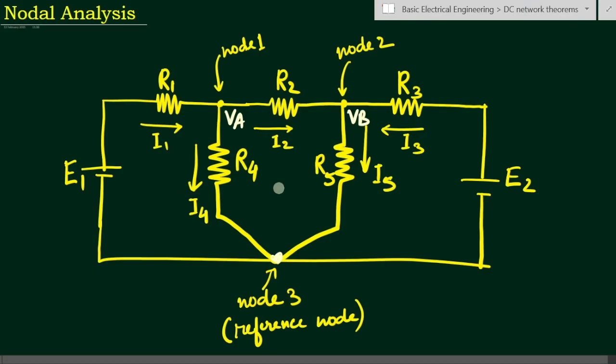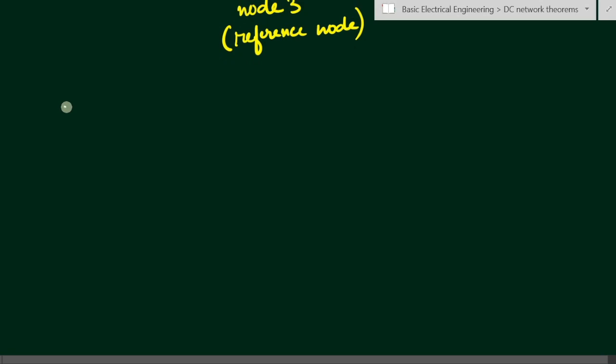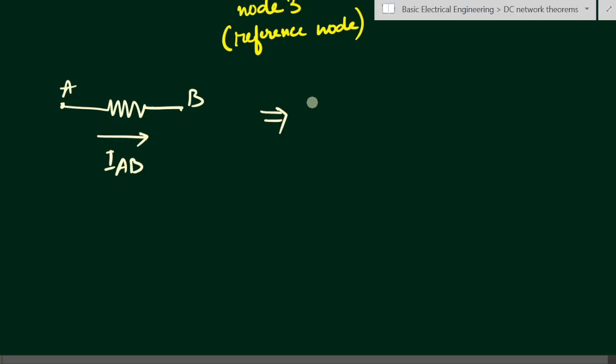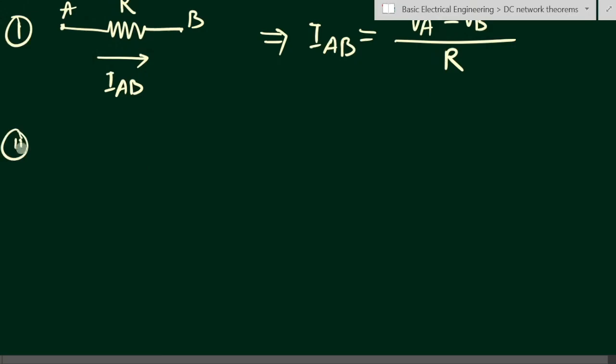First, if there is only one resistance between points A and B, and the direction of current Iab is from left to right — that is from A to B — then point A has a higher potential than point B. The current Iab equals the potential at A minus the potential at B divided by the resistance R: Iab = (Va - Vb) / R.